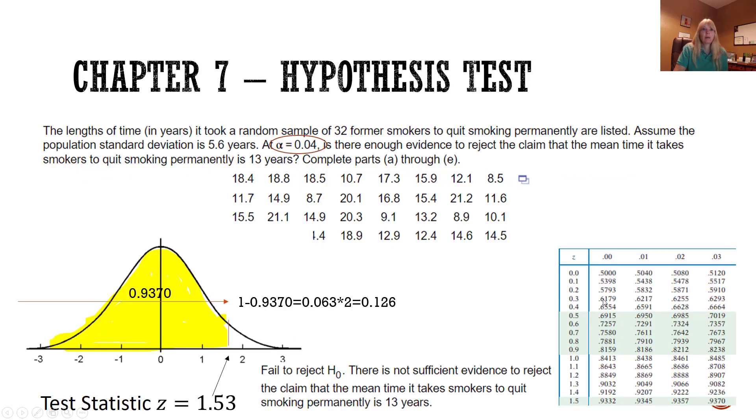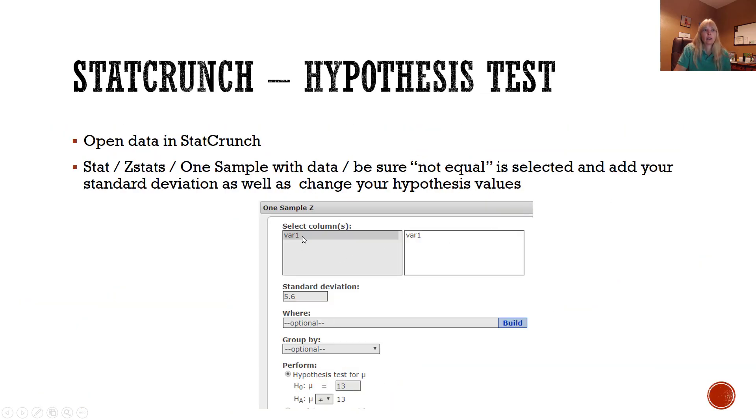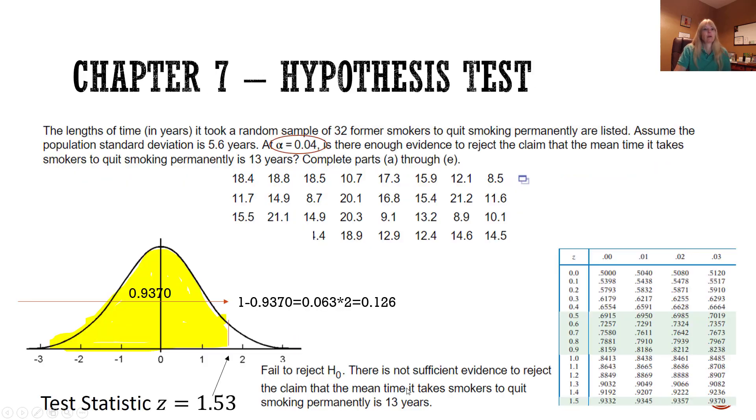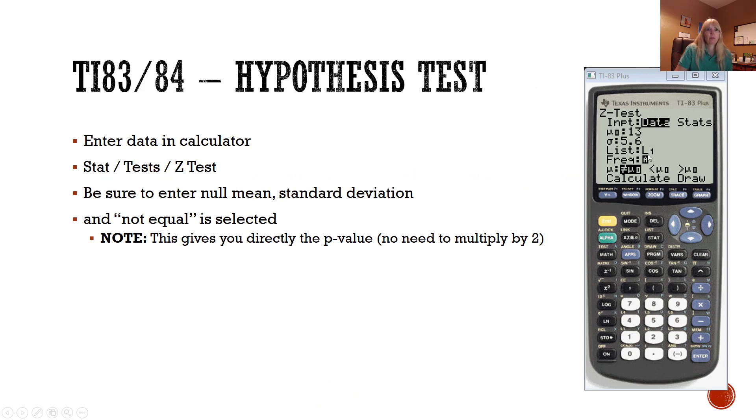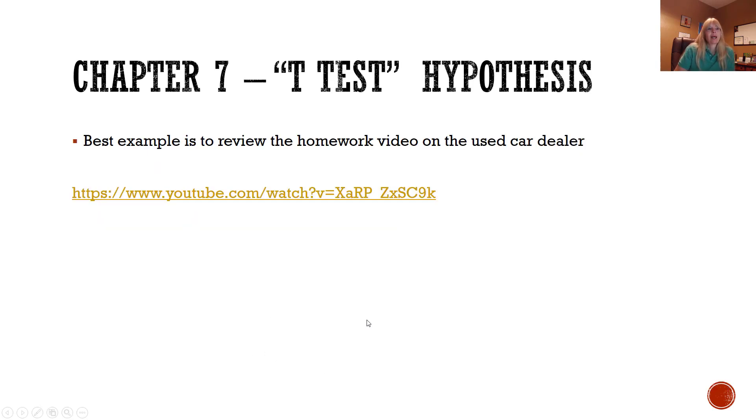You can do this in StatCrunch. Just click on the side button right here to open the data in StatCrunch, be sure you select your column, also be sure you put the standard deviation, the population standard deviation, and then finally change these values here. This will directly give you that value, you won't have to multiply it by two. Or you can use your calculator - once again you have to go put the data in your calculator and be sure the null is 13, population standard deviation, you're in that first list, and then not equal and calculate. This directly gives you the actual p-value, so no need to multiply by two.